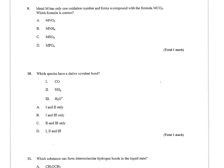Question number nine says metal M has only one oxidation number, so it's not a transition metal. It forms a compound with the formula MCO3. So since CO3 has a minus two charge, we can assume that its one oxidation number is plus two. So which formula is correct?